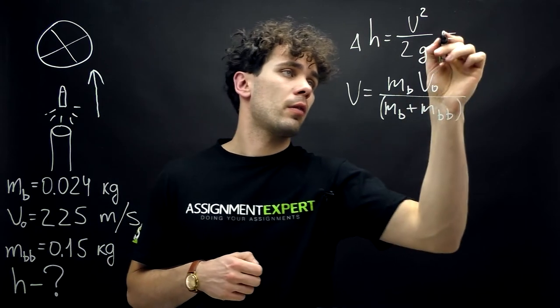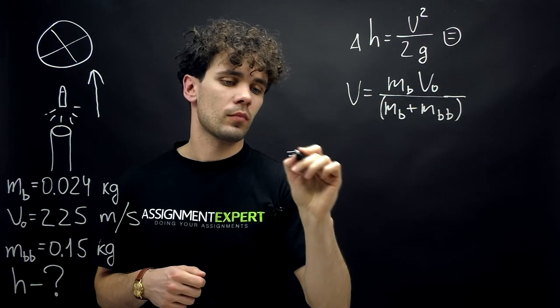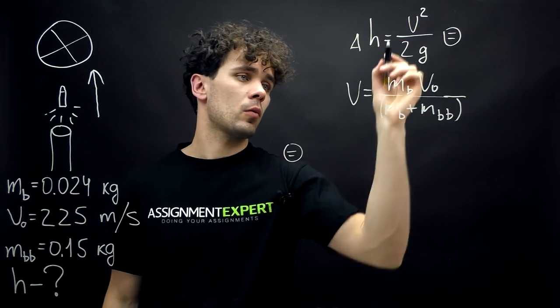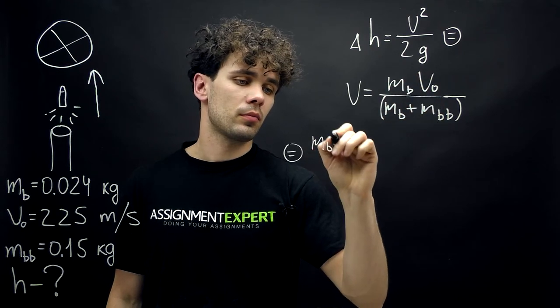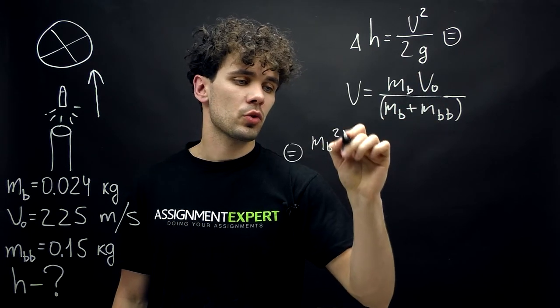So, we get the following. The change of height equals M_b squared times V0 squared...